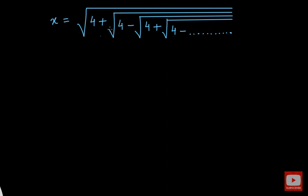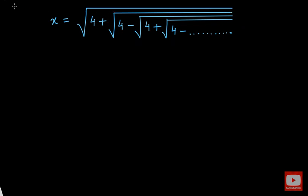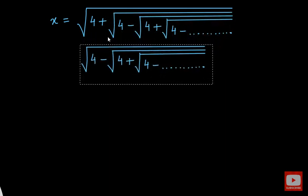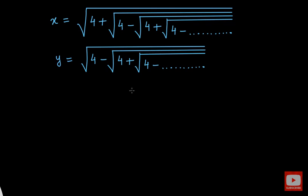Now we have this inner part: that is the square root of 4 minus square root of 4 plus square root of 4 minus square root of 4. I am going to take that value separately and assign it as y. So let this inner part be equal to y. Let me take the first expression as equation number 1 and the second as equation number 2.